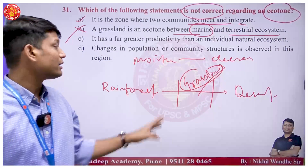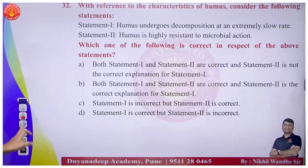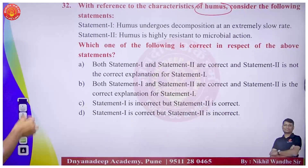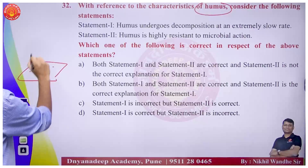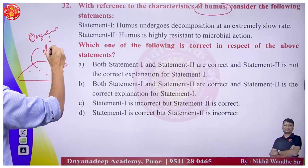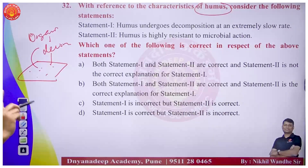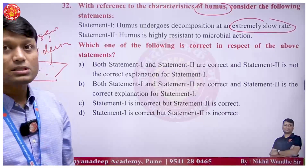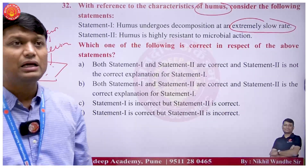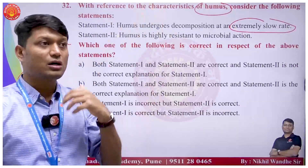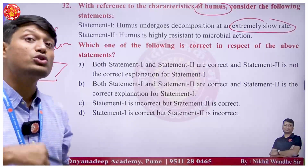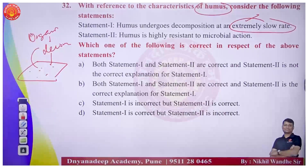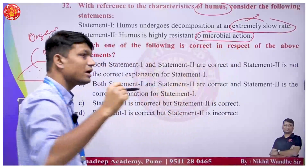Question 32 on humus: when organic matter decomposes it forms humus. Humus undergoes decomposition at an extremely slow rate. It is highly resistant to microbial action, making it very difficult to break down. It contains complex chemicals that are also very difficult to biodegrade.